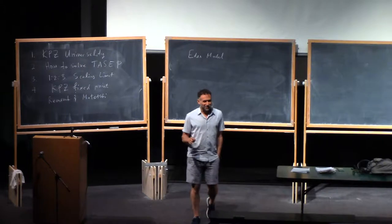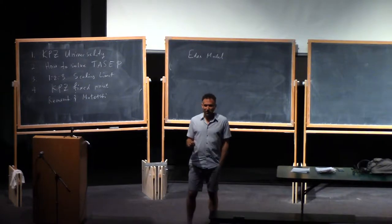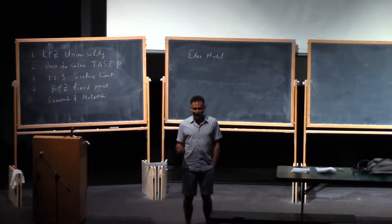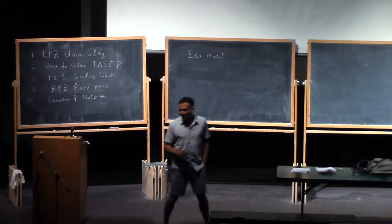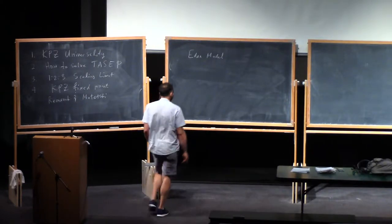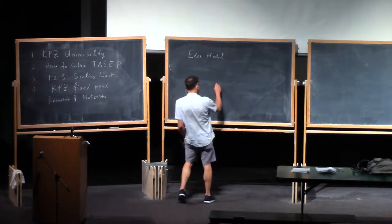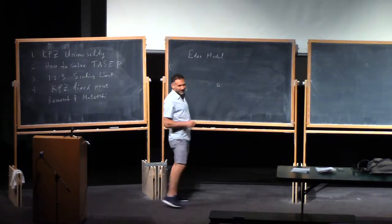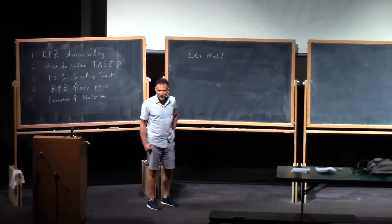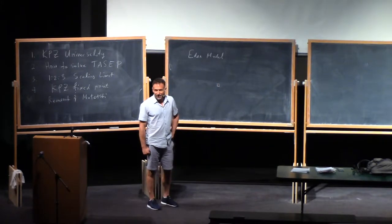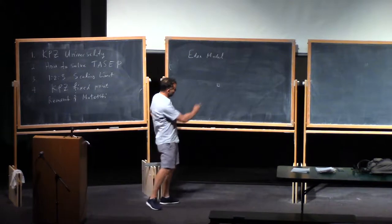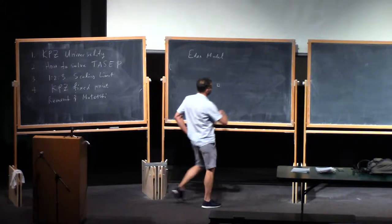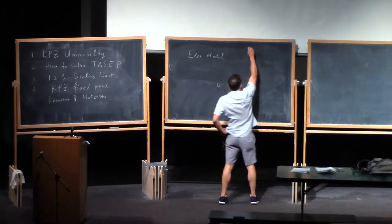So if you're like me and you get bored in these talks, you can just sit there and try to solve the Eden model. The Eden model is on a lattice — it's two-dimensional — or rather, it's a height function in one dimension. One-dimensional random growth.